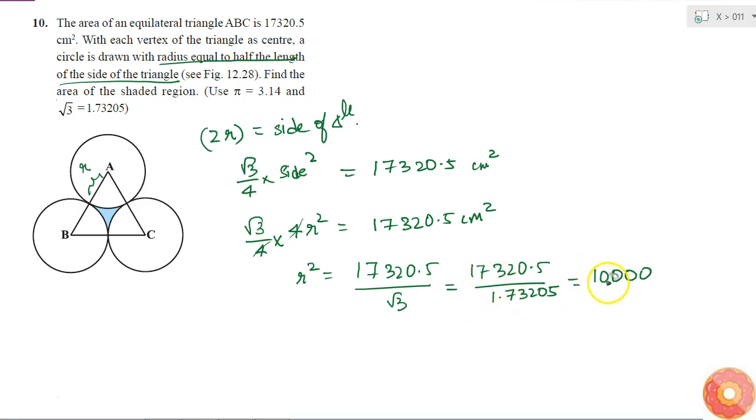So, this is equal to 10,000. If 10,000, I can also write it as 100 square. So, this means that radius R is equal to 100 cm. So, I found the radius of the triangle, radius of the circle. So, what is the area of the shaded region? Shaded region is that part which is left if I remove all these three sectors from the equilateral triangle.